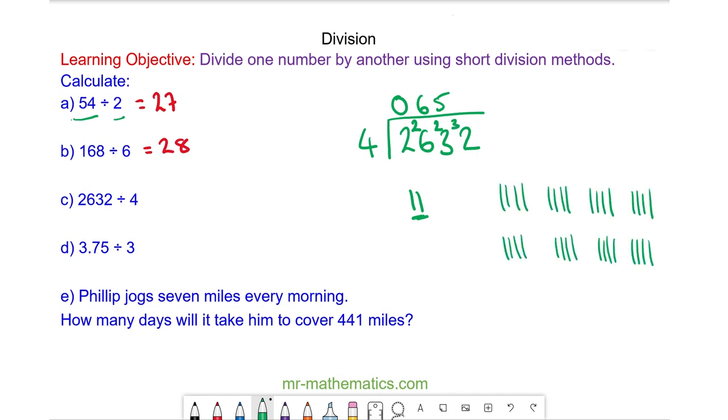And here we have 32 with 8 groups of 4. So 4 goes into 32 8 times. So 2632 divided by 4 is 658.